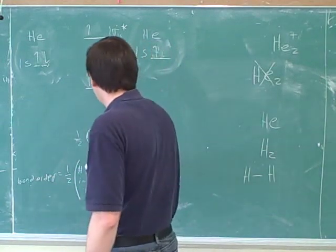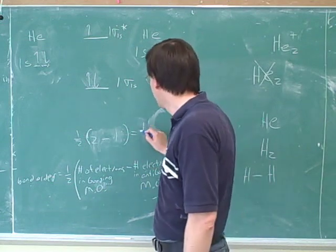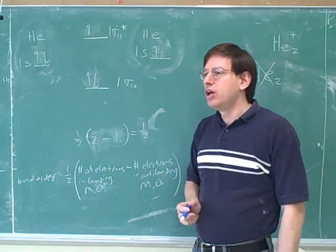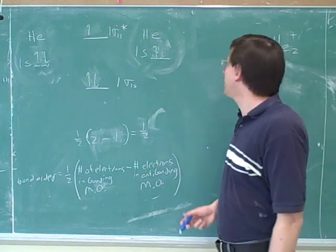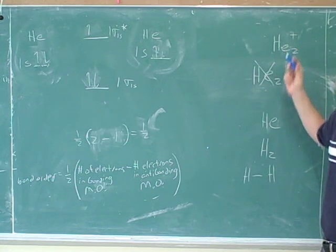One half, yeah. One half, which again would indicate, in a sense, half of a bond, which again indicates that this is a stable and formable ion. We can actually make this because it has some bonding.